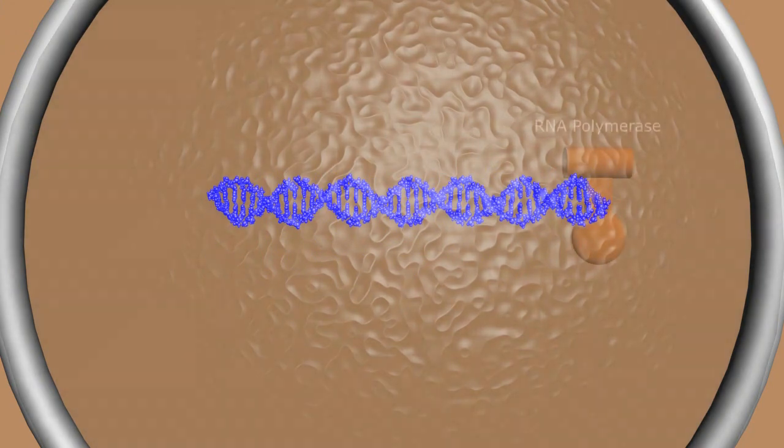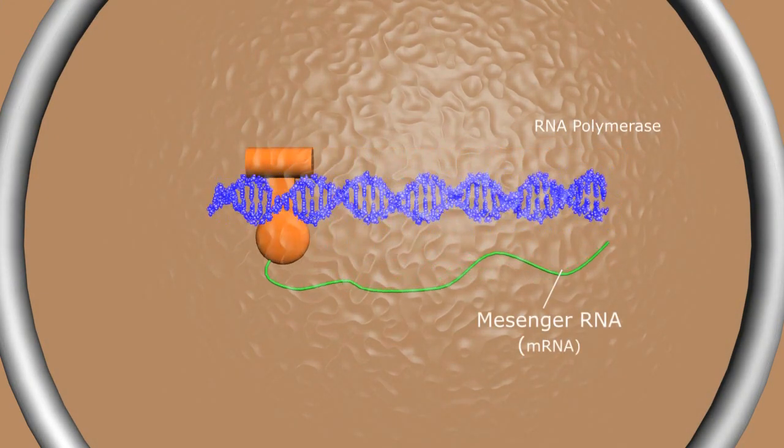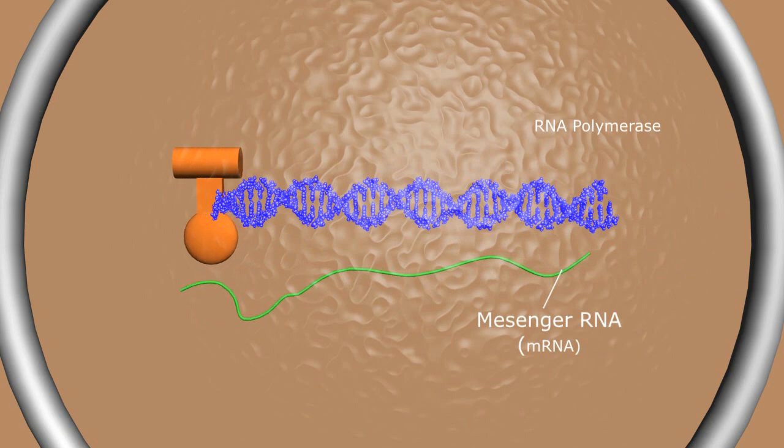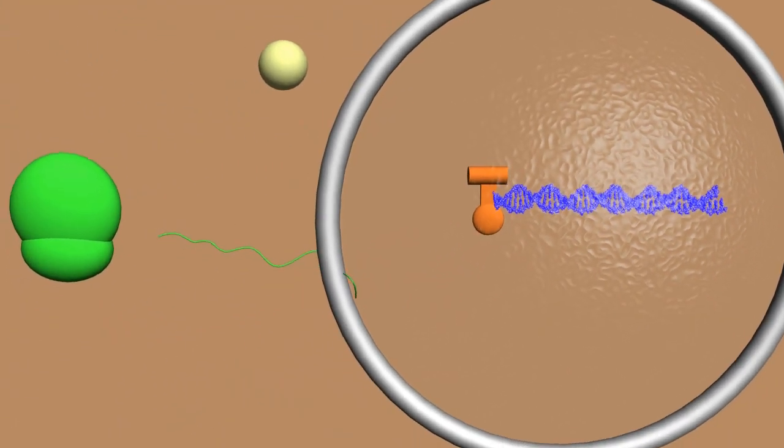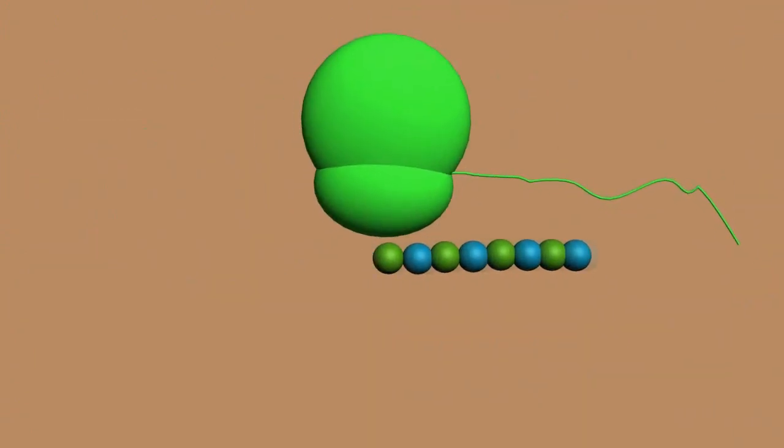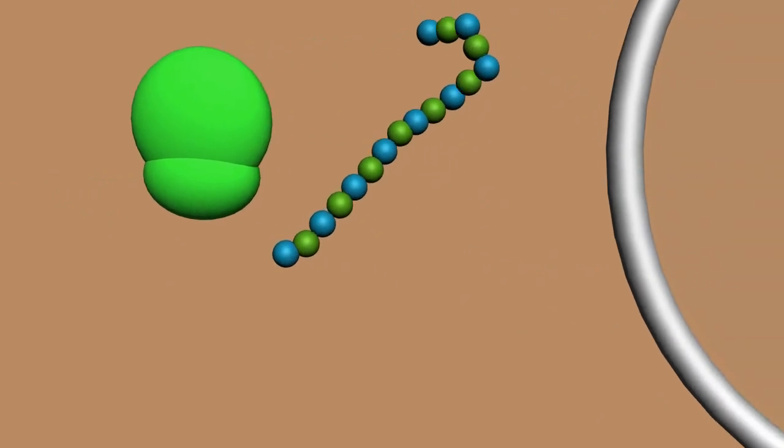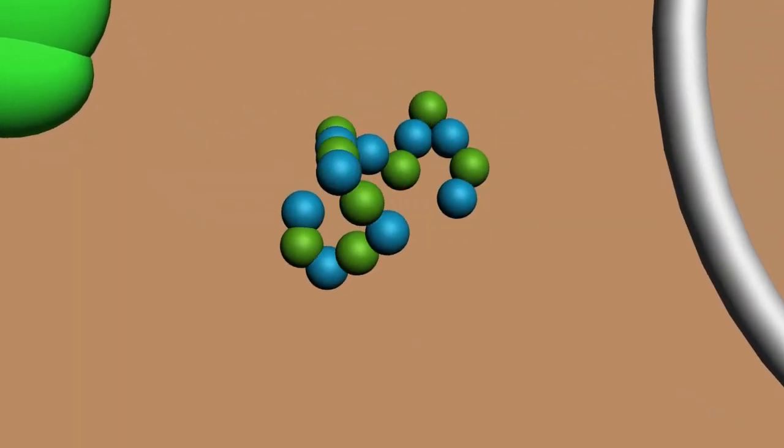The polymerase reads the genetic code and produces messenger RNA or mRNA. This genetic template can leave the nucleus and enter the cytoplasm. The ribosome, with a large and small subunit, then reads the messenger RNA, assembling a series of amino acids into a specific order which then fold into a complex 3D geometry, producing all the necessary structural and enzymatic proteins that keep us alive.